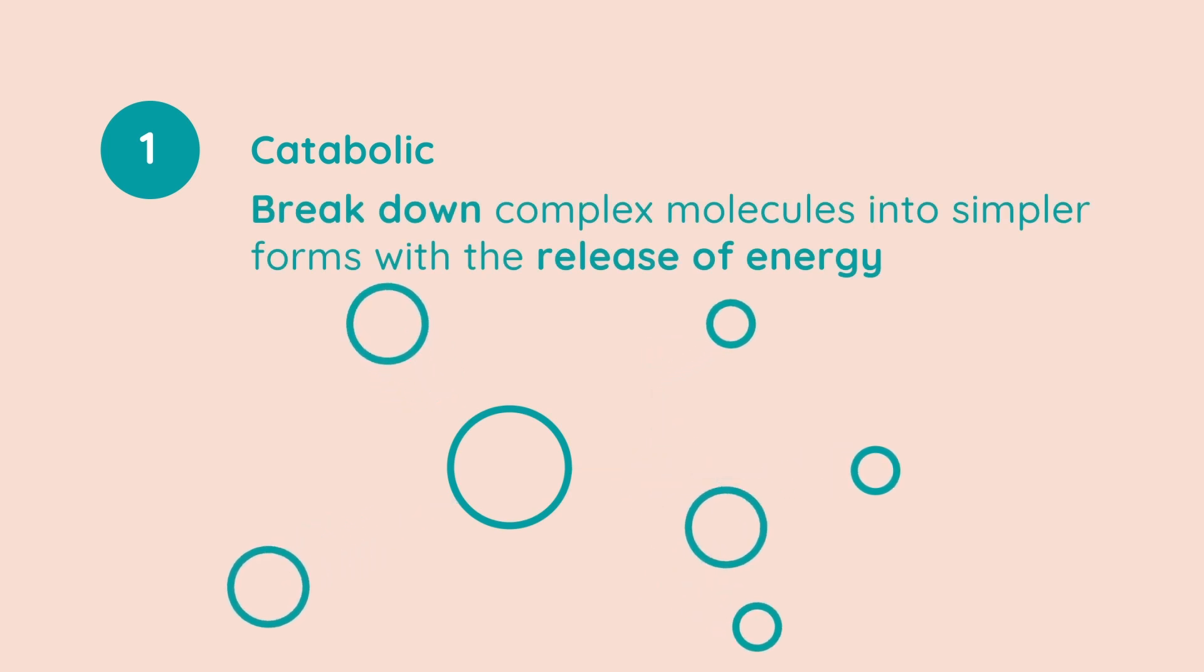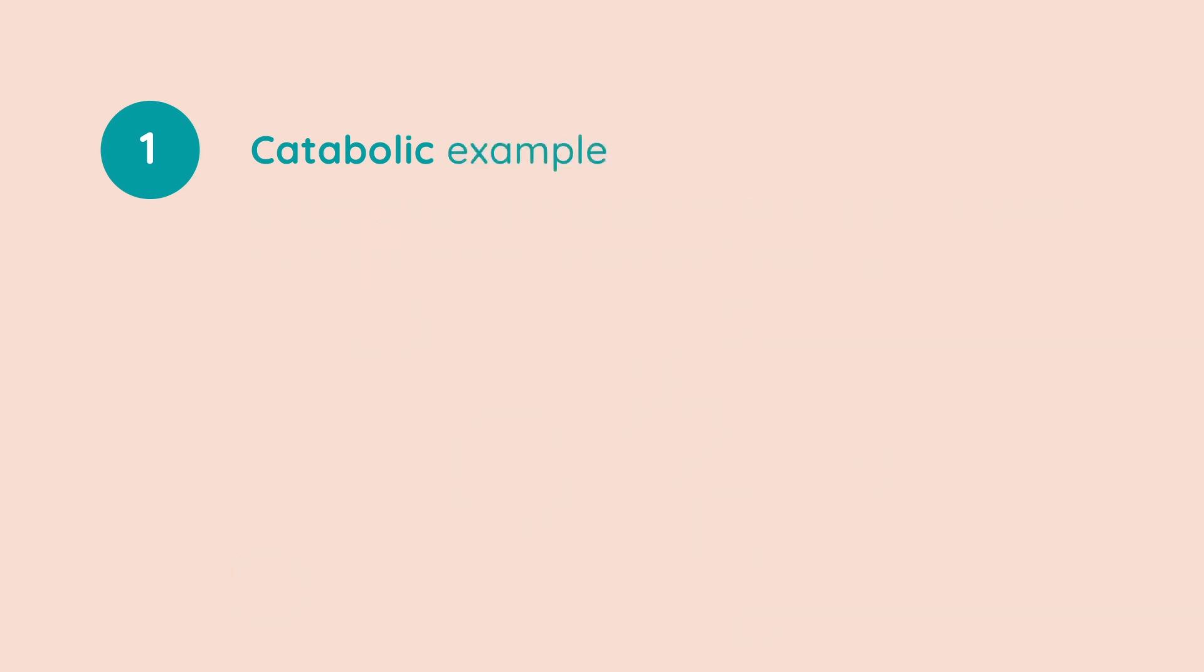So first off, we'll take a look at catabolic reactions. These break down complex molecules into simpler forms with the release of energy. For example, the enzymes that control respiration are catabolic, or amylase is a catabolic reaction. Amylase is a catabolic enzyme which breaks down starch to maltose.